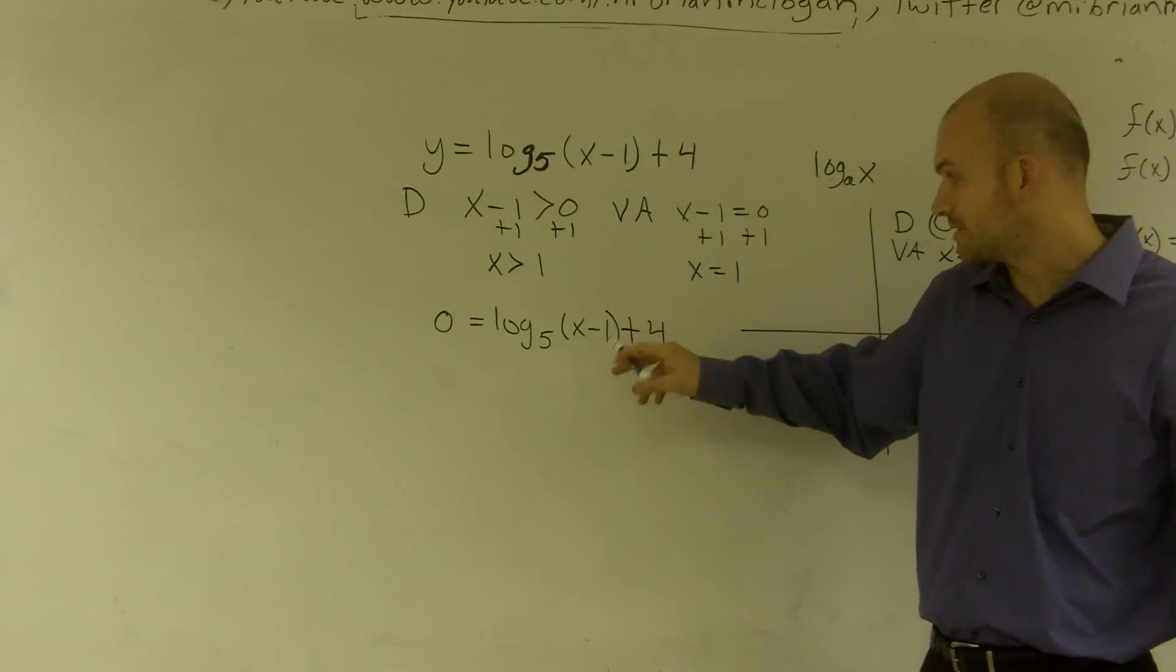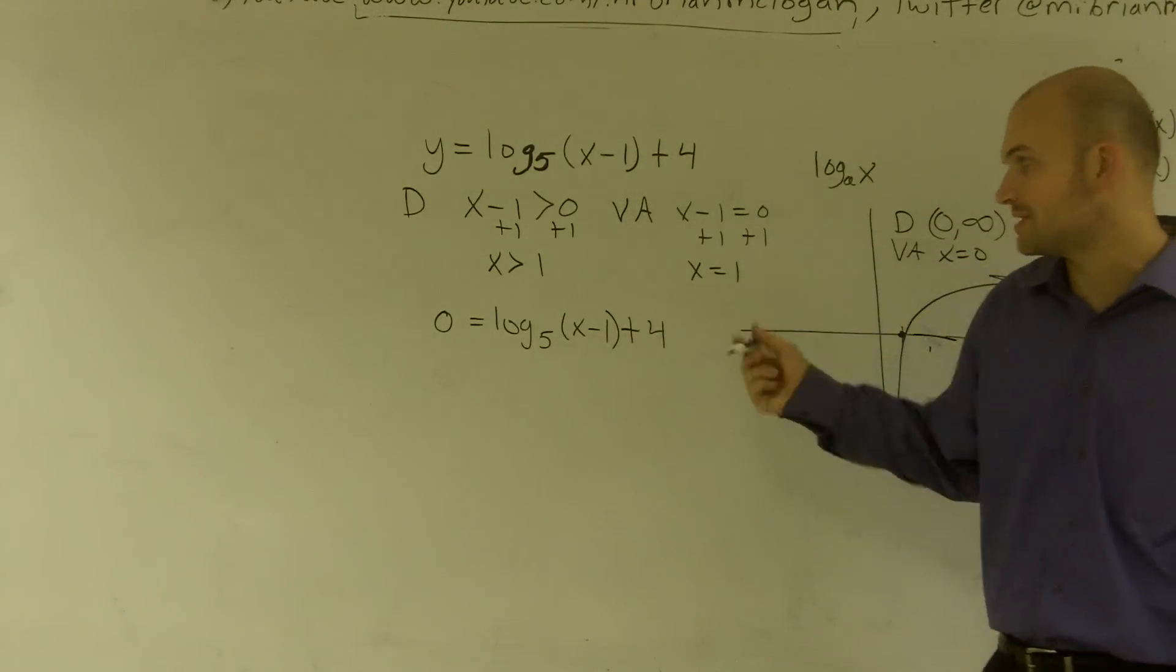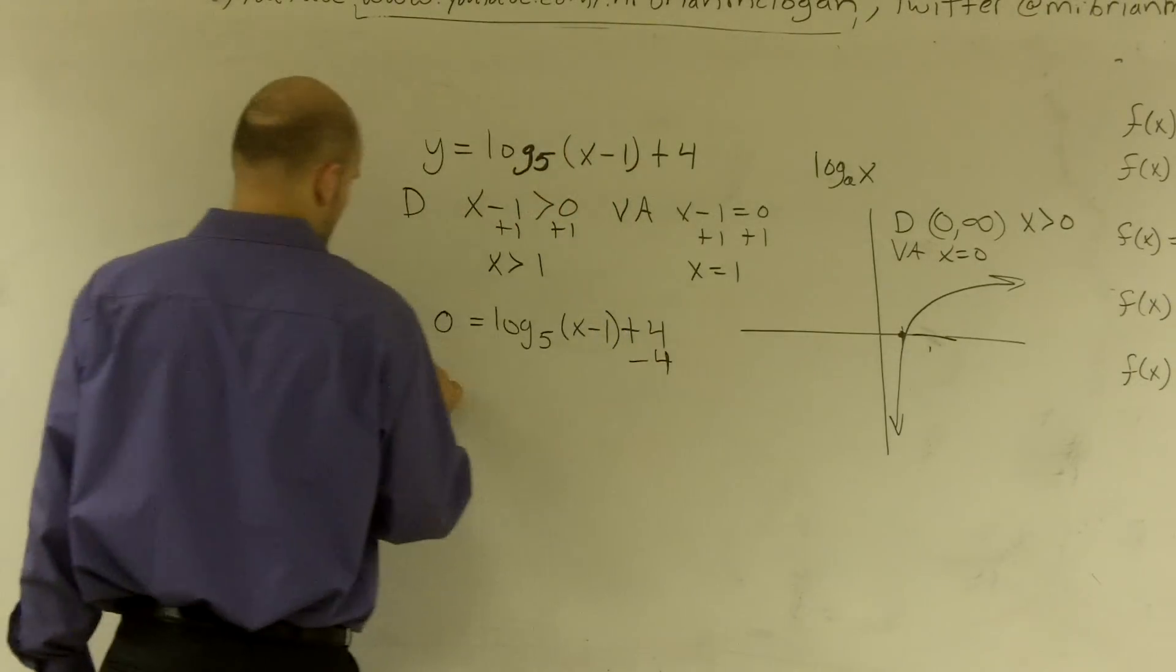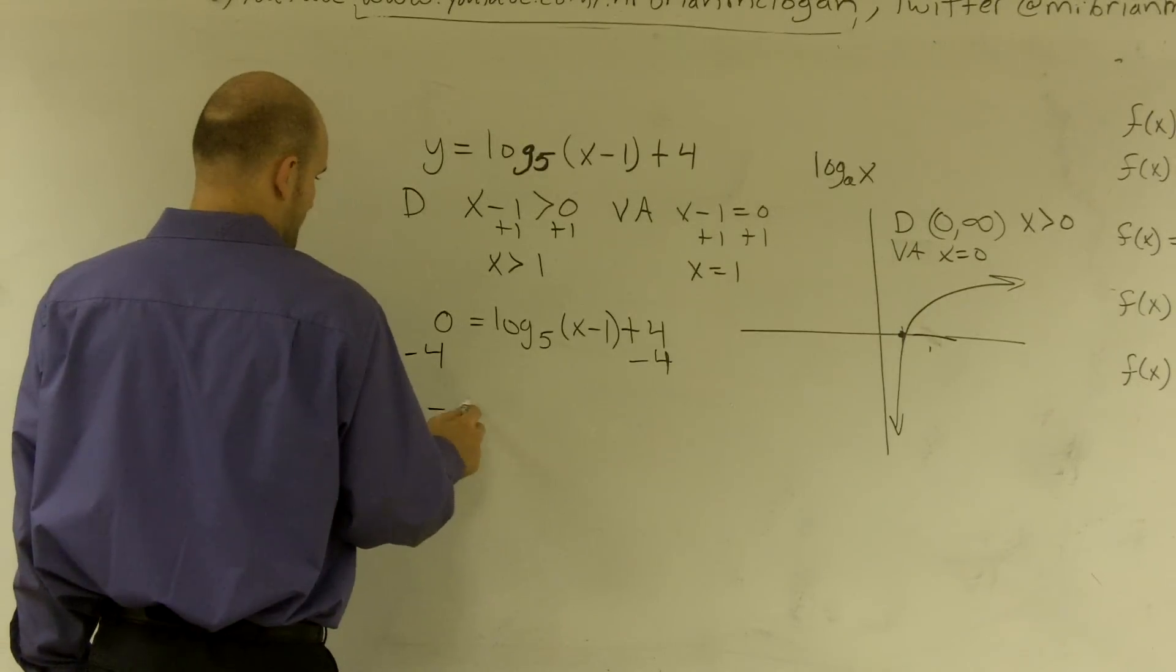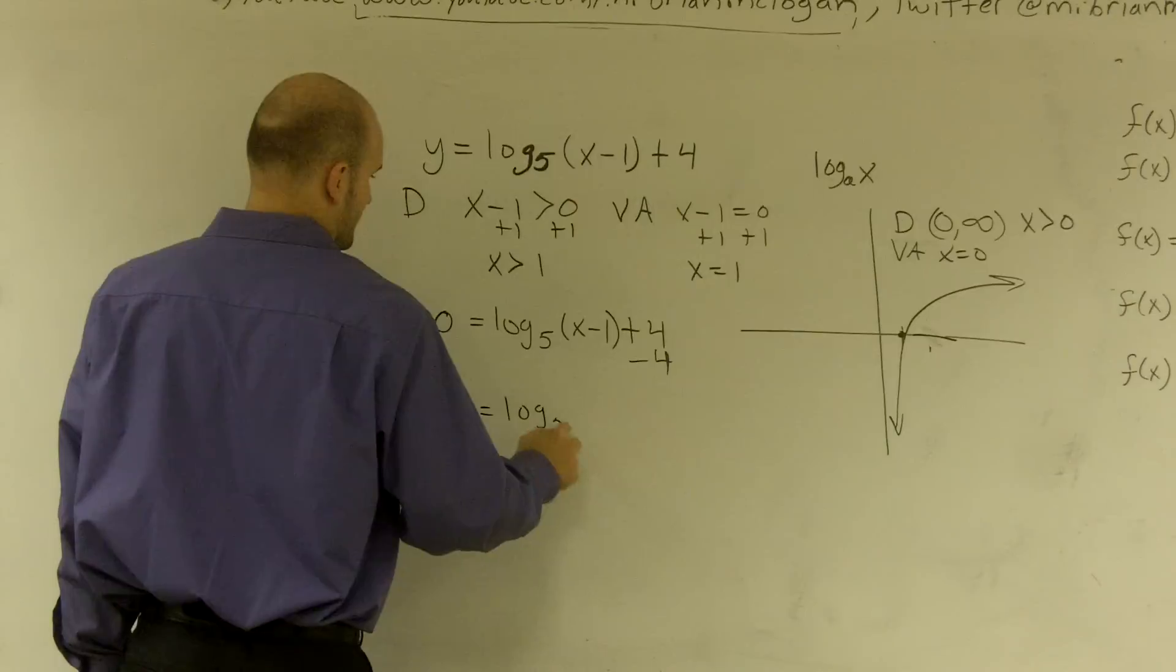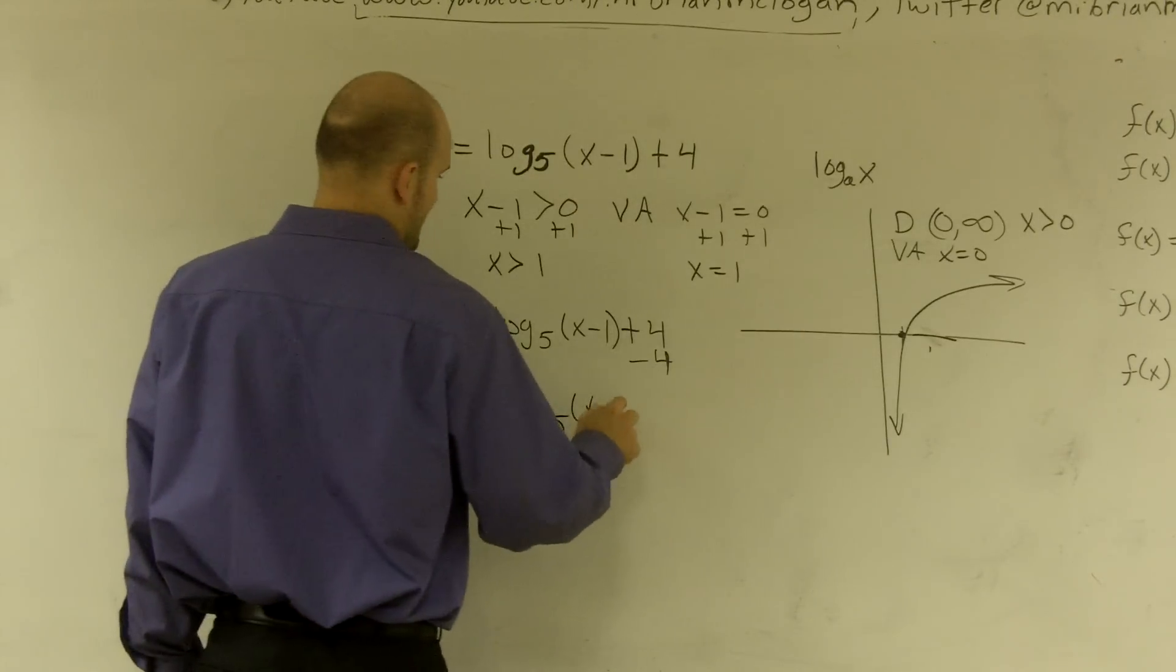But right now this is not in logarithmic form because of the plus 4, so I need to get rid of it. So I'm going to subtract that to the other side and get negative 4 equals log base 5 of (x minus 1).